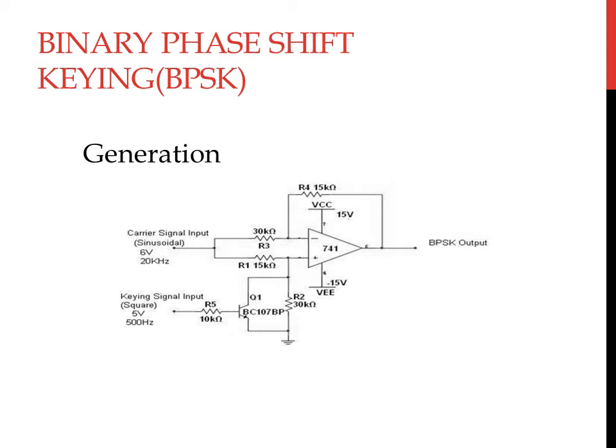In this particular circuit for modulation of BPSK, we make use of an NPN transistor, a 741 op-amp, an input modulating signal M(t) which is a square waveform having a peak-to-peak voltage of 5 volts, and a carrier signal C(t) having a peak-to-peak voltage of 6 volts. Similar to the concept explained in ASK, the frequency of M(t) is less than that of the carrier.